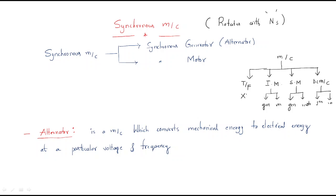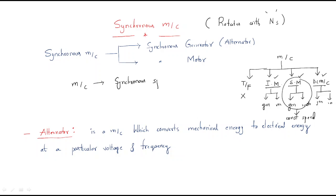The transformer is a static device — there is no rotation; it is a constant static device. In the case of induction, synchronous, and DC machines, all have rotating parts. Among these three, only the synchronous machine rotates at a constant speed — that is why it is called the synchronous machine, whether it operates as a motor or as a generator.